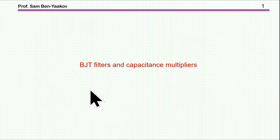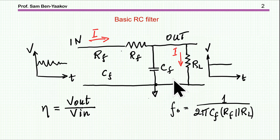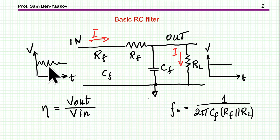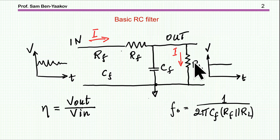Hi, I'm Sabine Yaakov. This presentation is entitled 'BJT Filters and Capacitance Multipliers.' The issue I'm talking about is the case in which we have a source, say a voltage source with some ripple on it, and we'd like to feed it to a load and filter out some of the ripple.